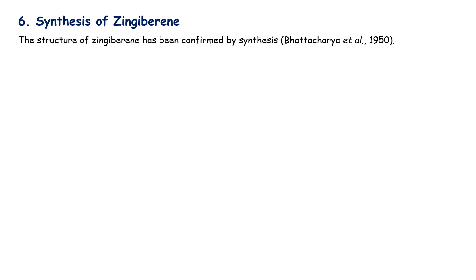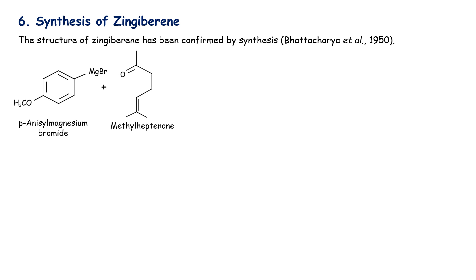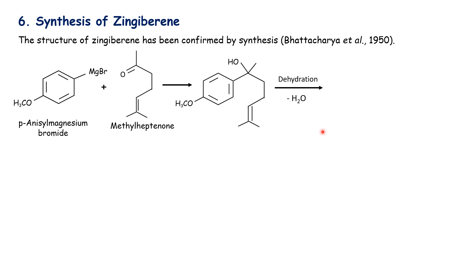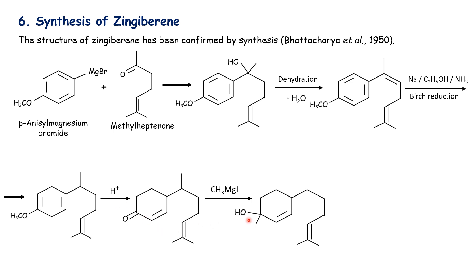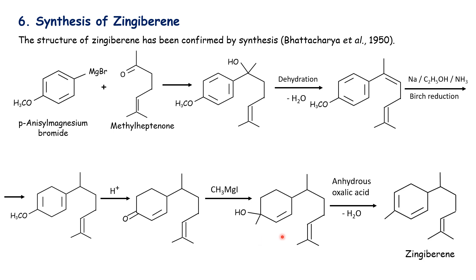The structure of gingivirine is confirmed by synthesis. The synthesis starts from para-anisyl magnesium bromide and methyl heptinone. After addition reaction, dehydration gives an intermediate product. Treatment with sodium in ethanol gives the reduction product. Subsequent treatment with acid, methyl magnesium iodide (Grignard reagent), anhydrous oxalic acid, and dehydration finally yields gingivirine.